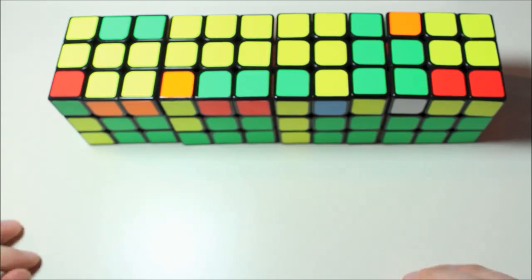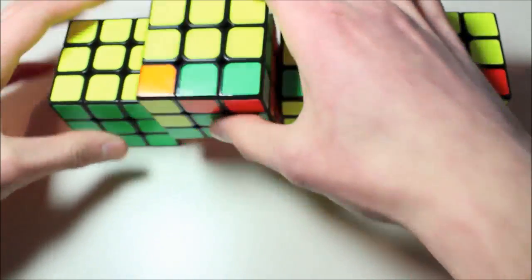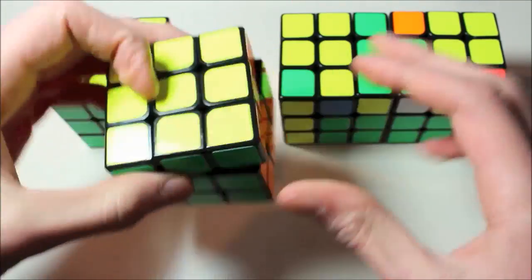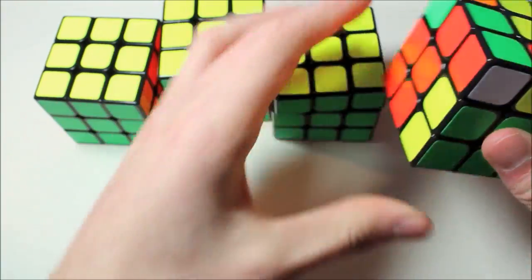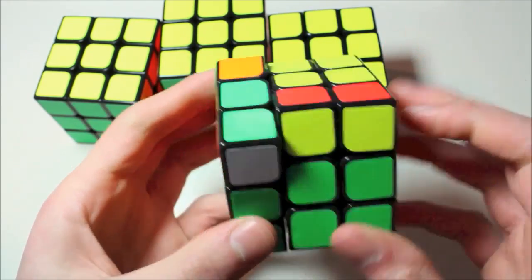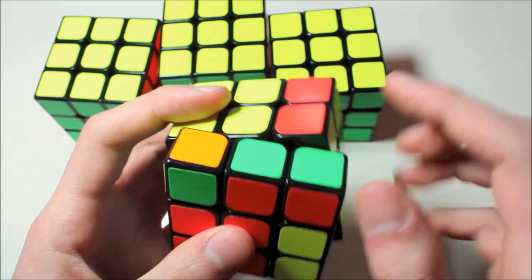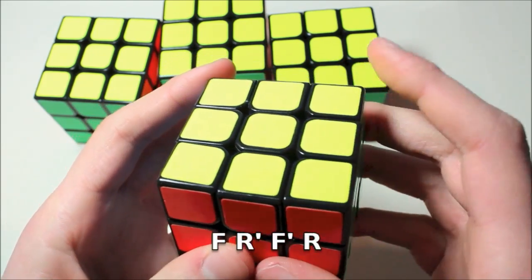You should also know the mirrors of all these triggers, which are L' U' L, L' U L, L' U2 L, and L F' L' F', which also can be executed from this angle as F R' F' R, which is just the inverse of a sledgehammer.